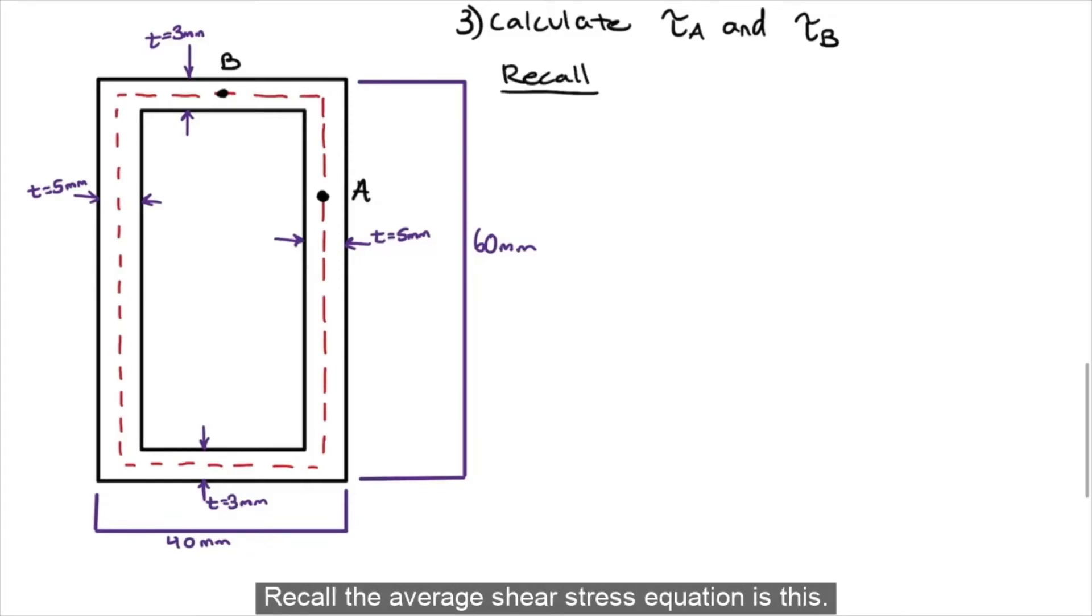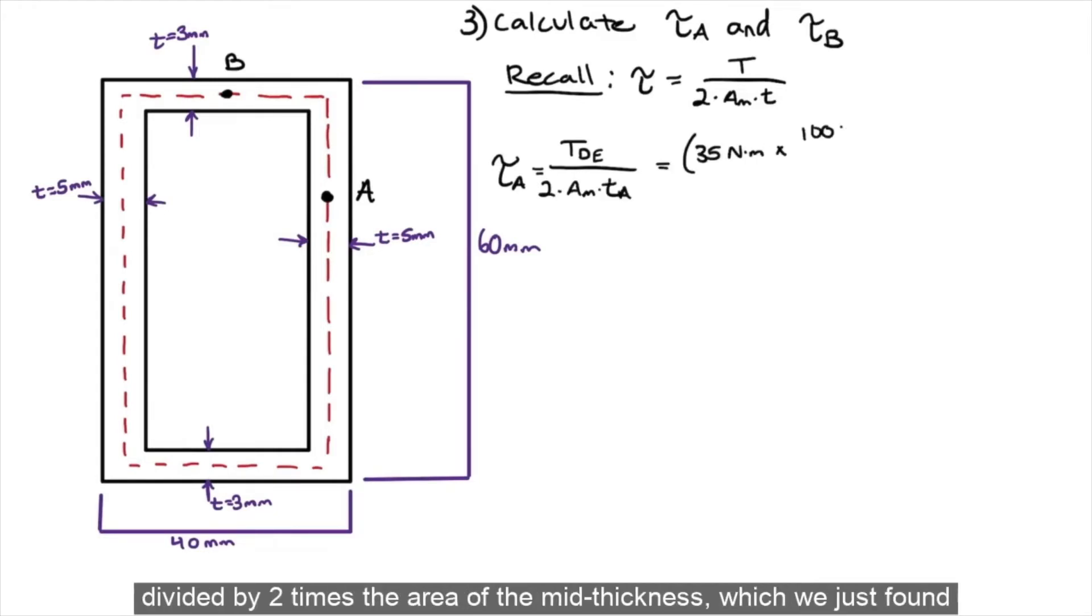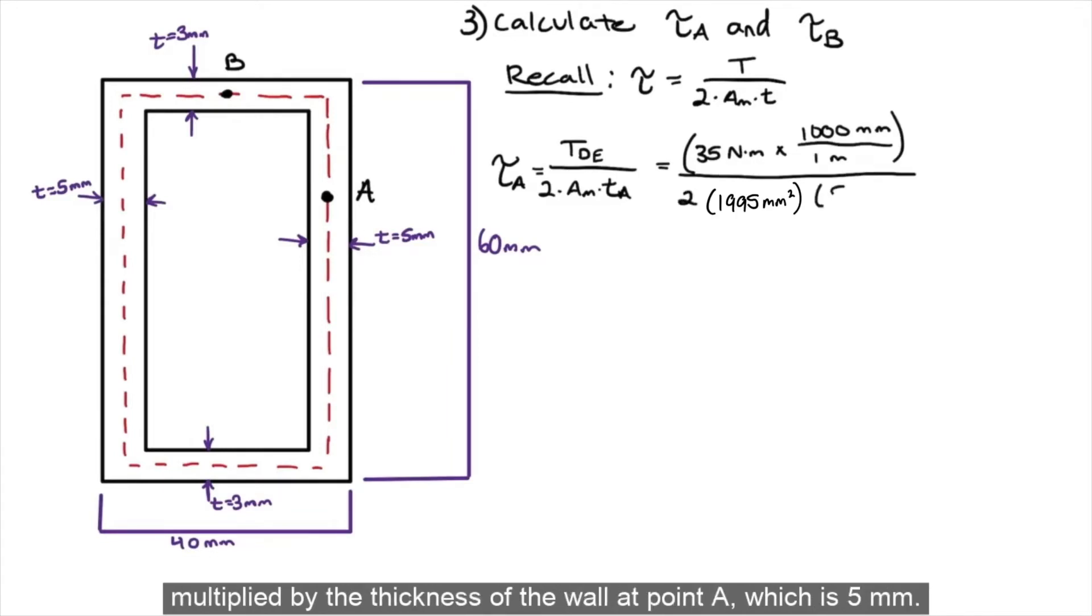Recall, the average shear stress equation is this. So, the shear stress at point A is equal to the torque between D and E, which is 35 newton meters, which will convert to millimeters, divided by 2, times the area of the mid thickness, which we just found, multiplied by the thickness of the wall at point A, which is 5 millimeters.